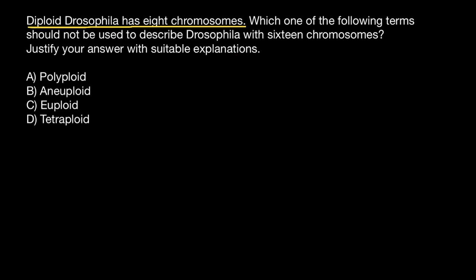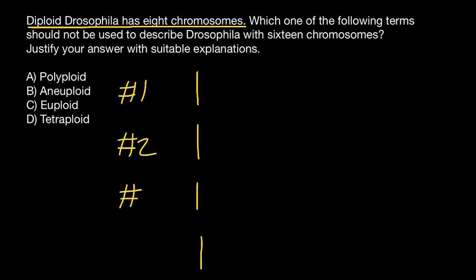A diploid Drosophila has eight chromosomes, meaning it has one chromosome from the father's side — number one, two, three, and four — and also has four homologous chromosomes from the mother's side. So the total number of chromosomes in a diploid organism is eight.